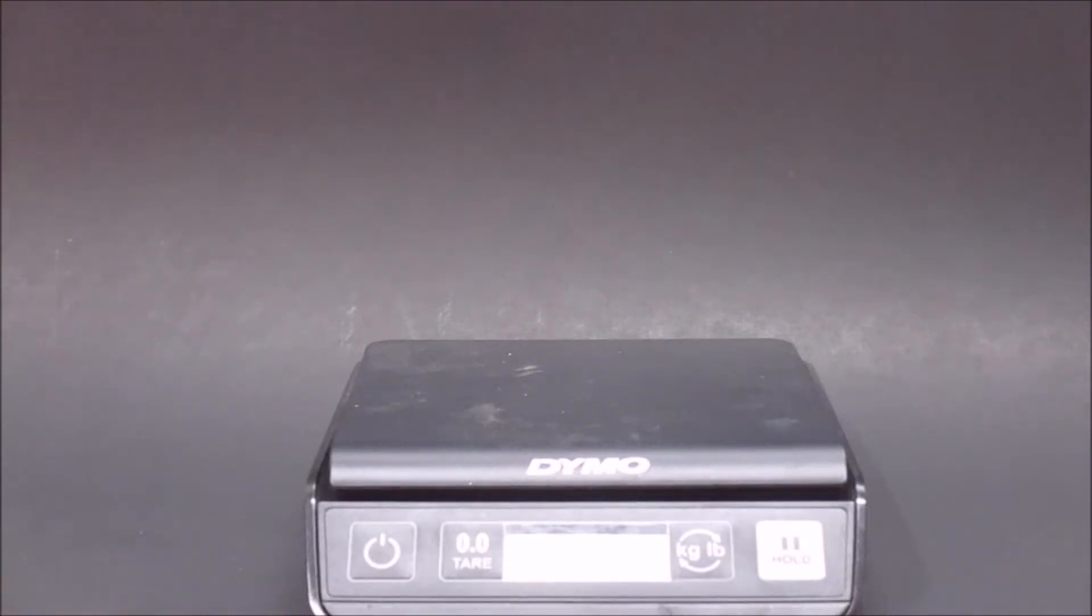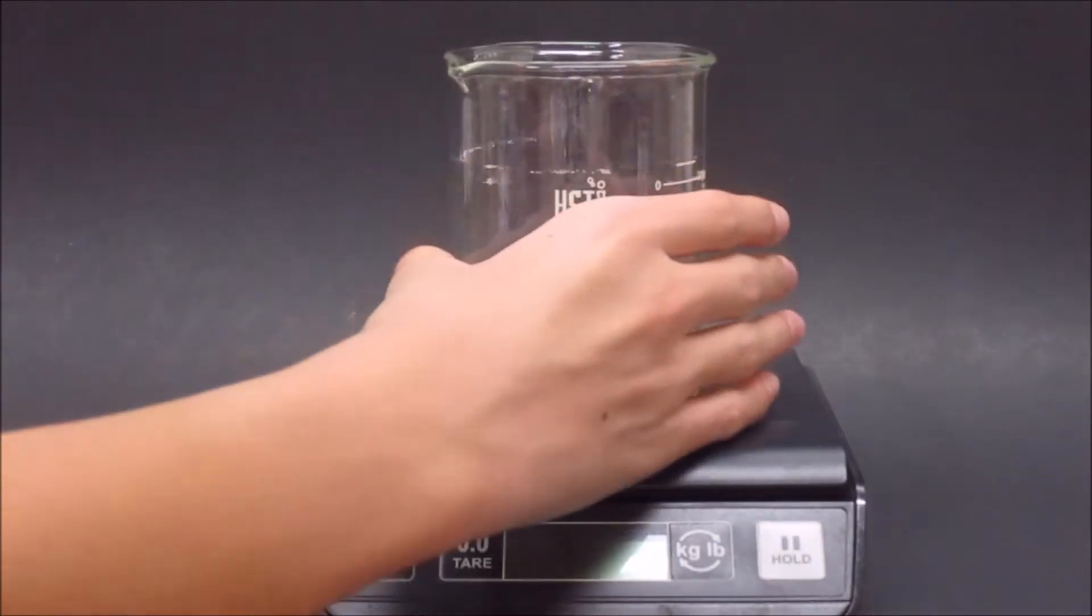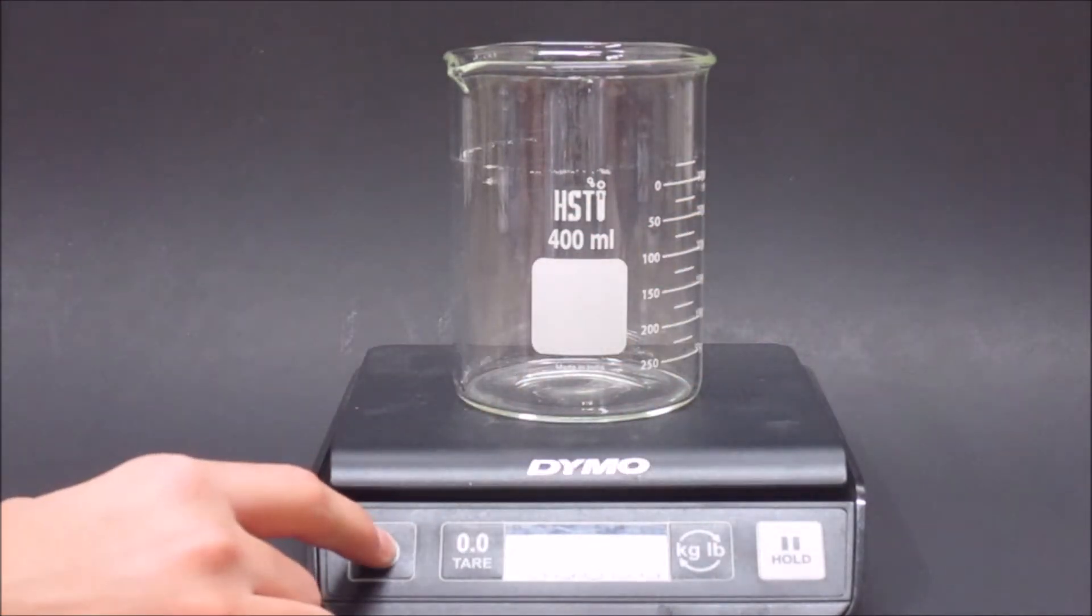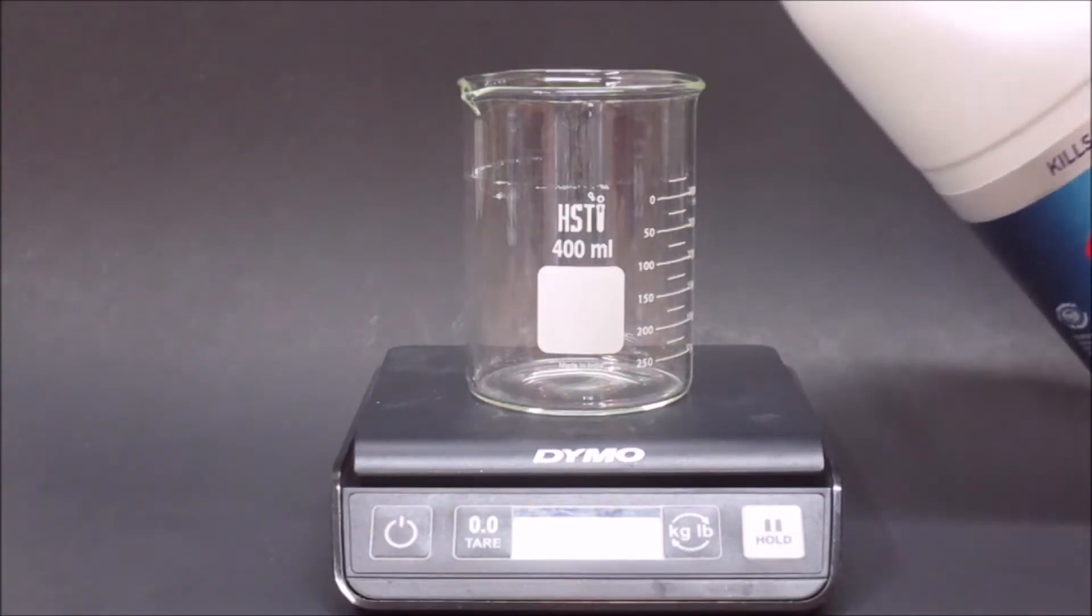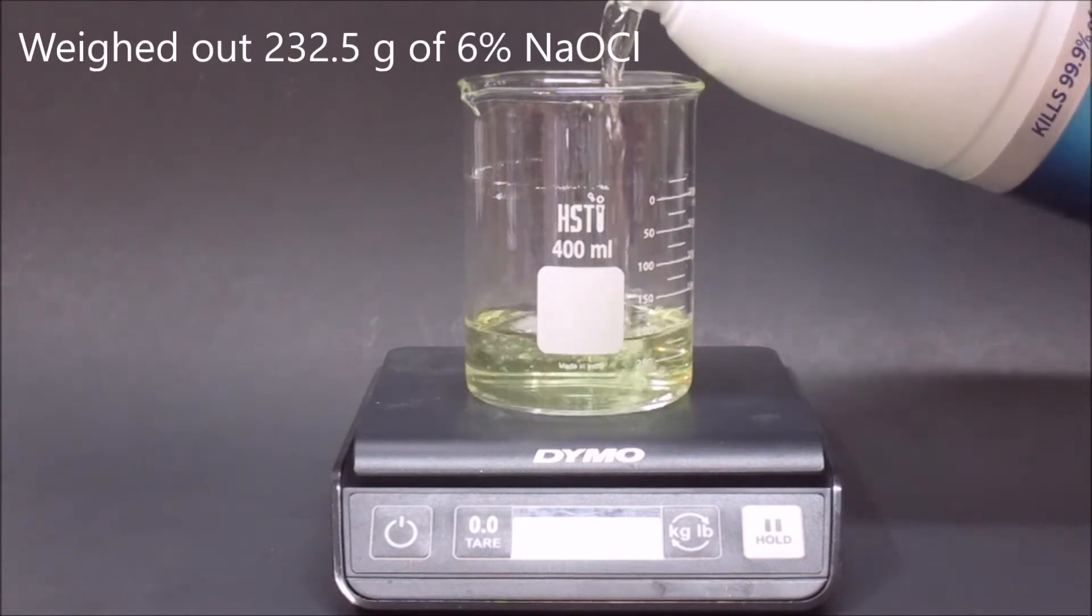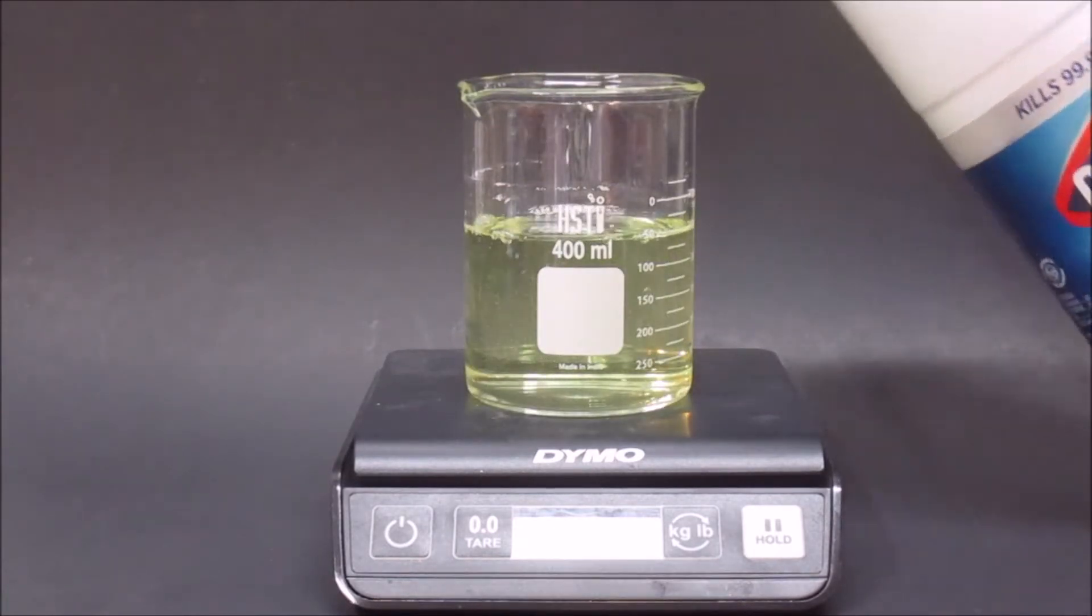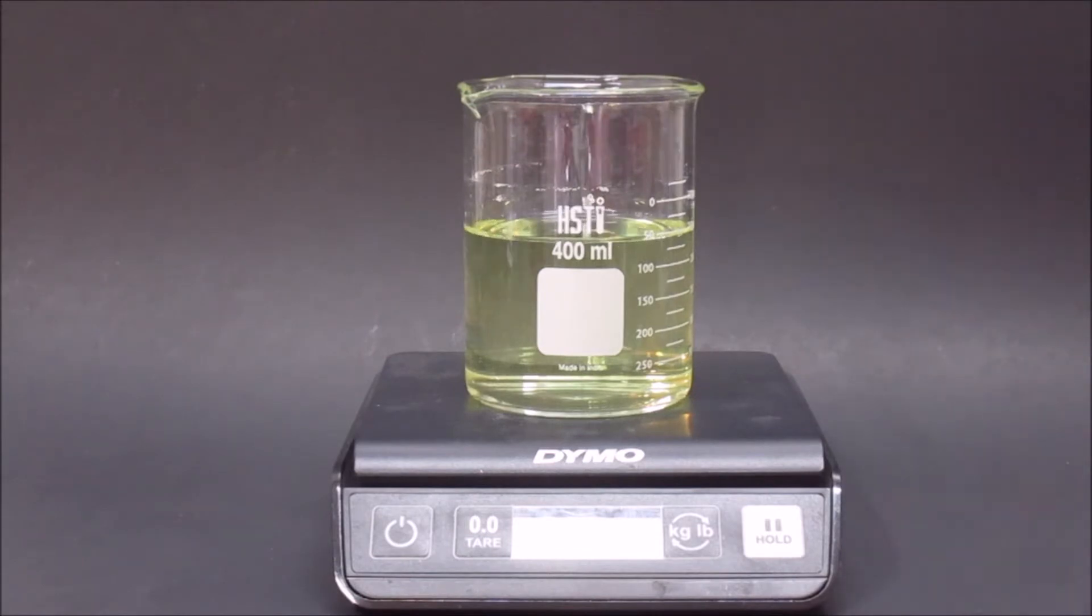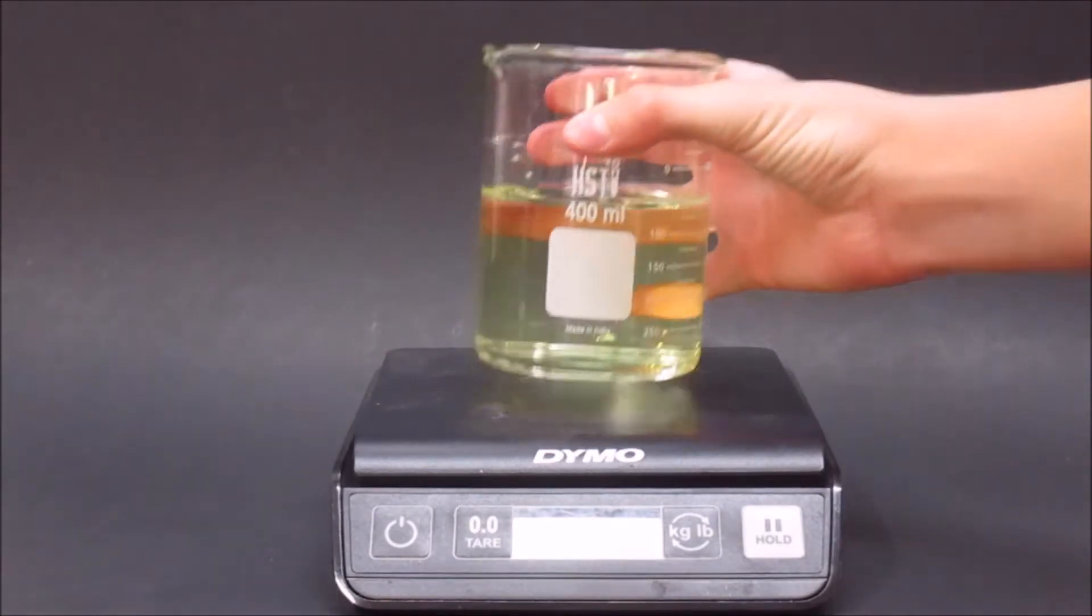To start, I got out my scale and then I put my beaker on the scale. I then weighed out 232.5 grams of bleach. After that was done, I took the beaker off the scale.